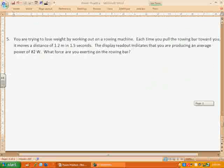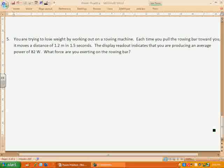You're trying to lose weight by working out on a rowing machine. Each time you pull the rowing bar towards you, it moves a distance of 1.2 meters in 1.5 seconds, so we've got a displacement this time. The display readout indicates that you're producing an average power of 82 watts. What force are you exerting on the rowing bar? Let's go ahead and find that out.